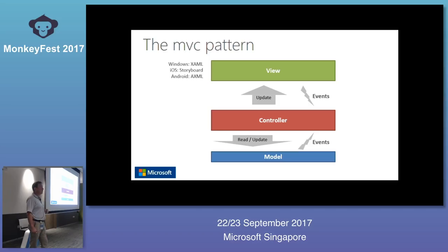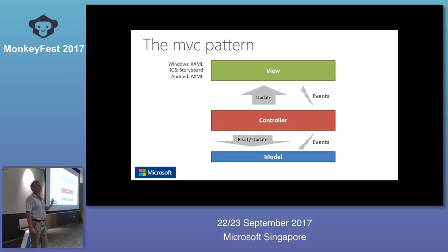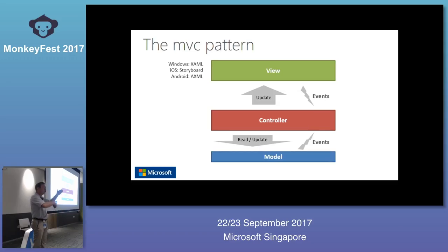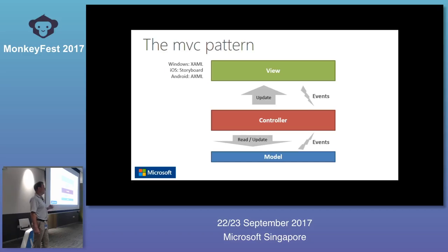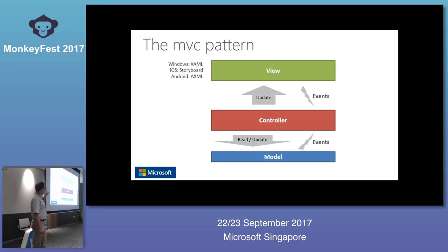For example, in Windows, the view is made in XAML — an XML-based markup language. On iOS we have storyboards, also XML-based. Android has AXML, also XML. We have so much XML in the view mostly because of visual designers — tools love XML. And this XML is also somewhat human-friendly; you can read it and type it directly, especially for Android and Windows.